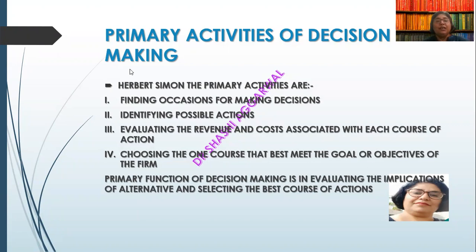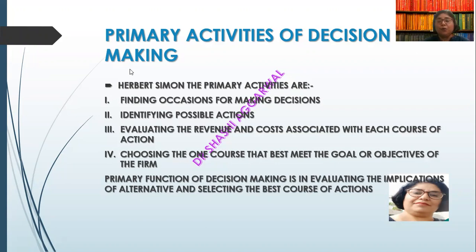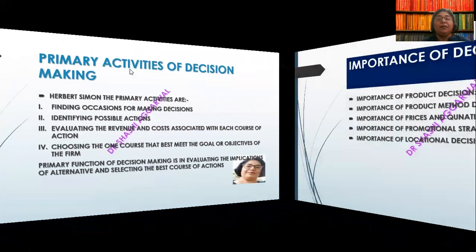What is the possible course of action? What is the possible cost and benefit? On that basis, we identify the best option to achieve our goal — that is the decision we have to take. The primary function of decision making is evaluating the implications of the alternatives and selecting the best course of action. When we have many choices, we evaluate what consequences, costs, and benefits each strategy brings, and then we take the better option.